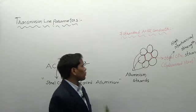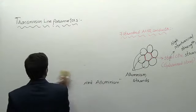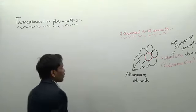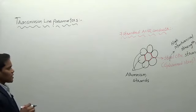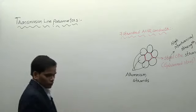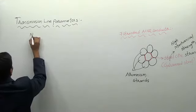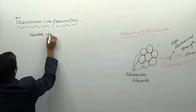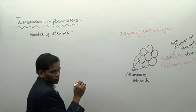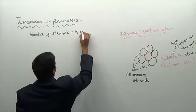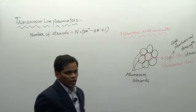Now we'll discuss the difference between ACSR conductor and expanded ACSR conductor, and the different types of ACSR conductors. In ACSR conductors, the formula for number of strands N is given by: N = 3x² − 3x + 1, where x is the layer number. This formula gives you the number of strands.